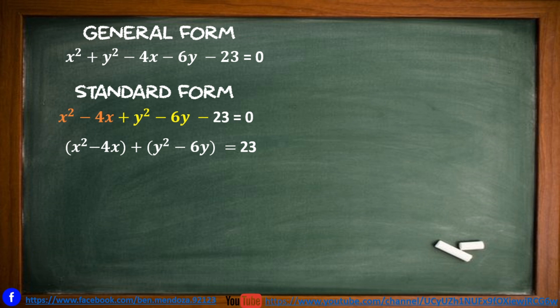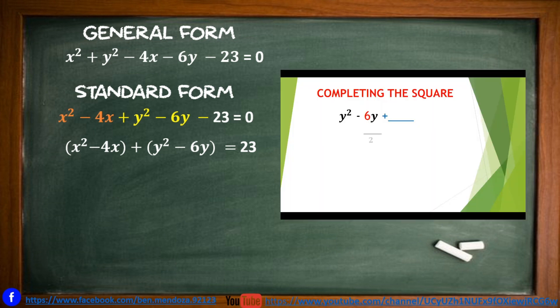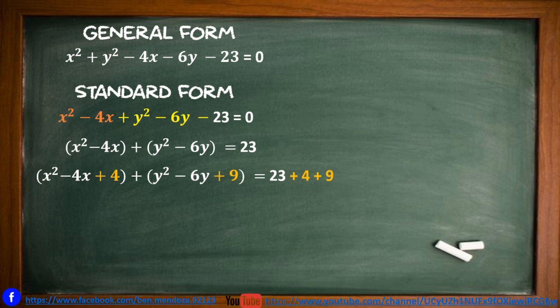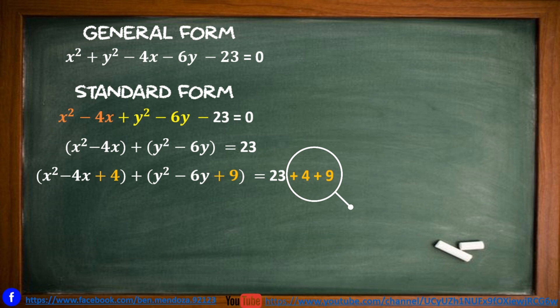For y squared minus 6y: get half of 6, which is 3, then square it to get 9. So we add 9 to complete the square. This gives us x squared minus 4x plus 4 and y squared minus 6y plus 9 equals 23 plus 4 plus 9 on the right side. Don't forget to add the same values to the right side to keep the equation balanced.